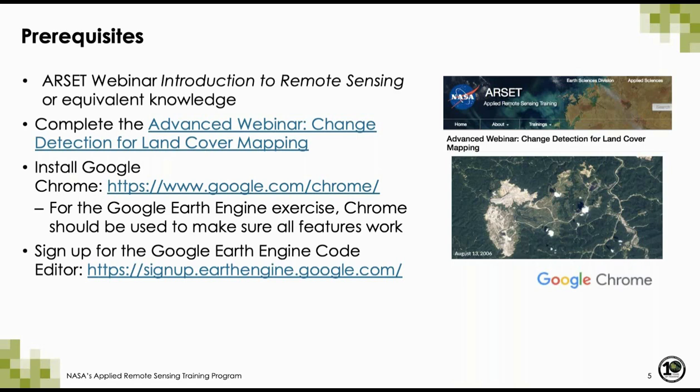Here are the course prerequisites. You should take the eLearning course Introduction to Remote Sensing, or have equivalent knowledge. You should also take our previous webinar on Change Detection for Land Cover Mapping. For the next session, you'll need to install Google Chrome and make sure you have a Google Earth Engine account — not for this session, but for the next. We won't be doing any code editing ourselves next week, but it's a good idea to have this account for future use.